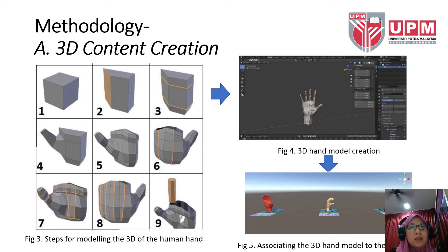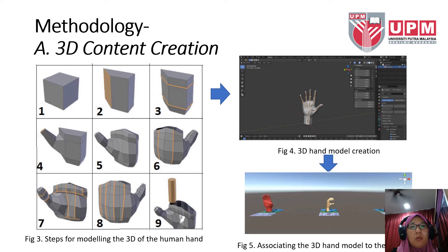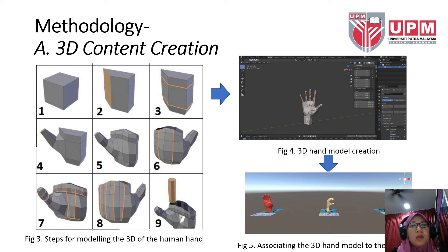The second activity of this phase is the model post-creation. The Blender software feature called armature is used to create poses for the models once the 3D human hand model development is completed. During this activity, the armature is inserted into the created model. A Blender armature can be said to be identical to a real skeleton because an armature can consist of several bones, much like a real skeleton. By using the armature, the movement of the 3D models can be controlled to the desired gesture or pose of a sign language.